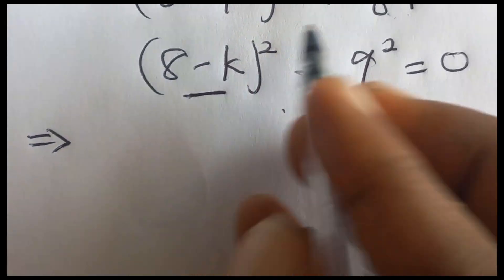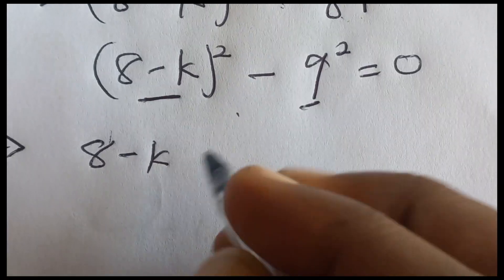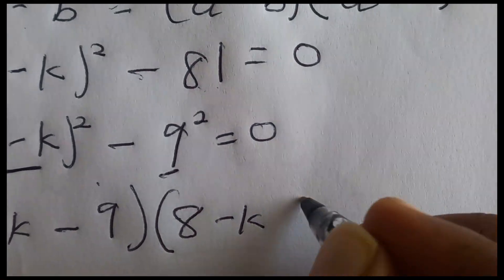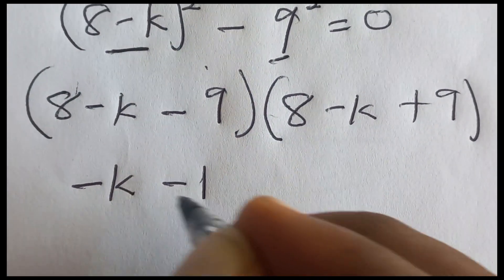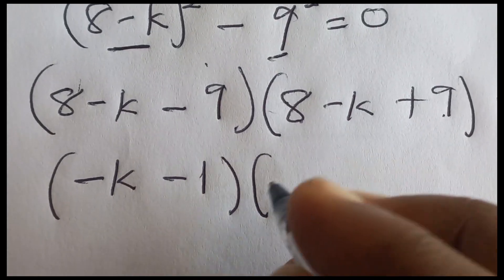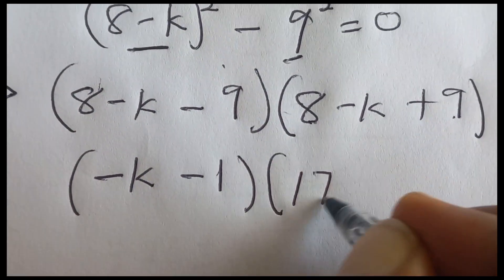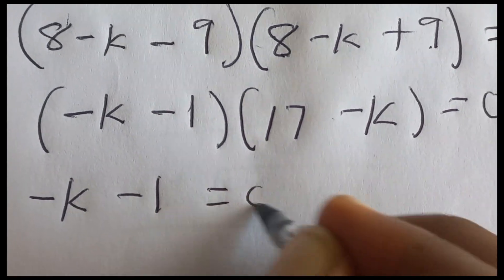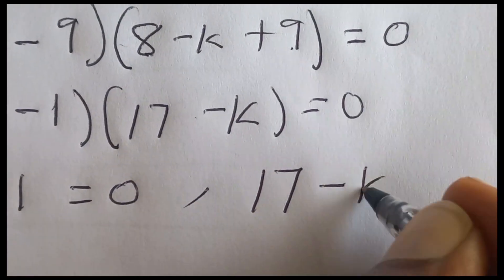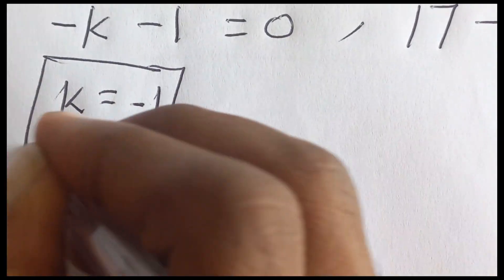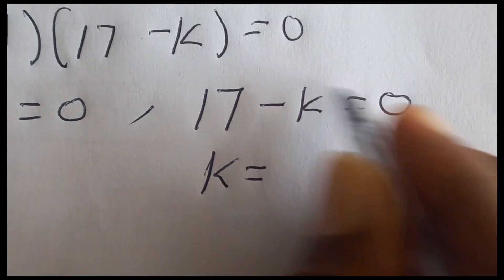Using the difference of squares formula we get (8 minus k minus 9) times (8 minus k plus 9) equals 0. That gives us (negative k minus 1) times (17 minus k) equals 0. So negative k minus 1 equals 0 gives k equals negative 1, and 17 minus k equals 0 gives k equals 17.